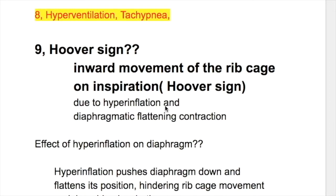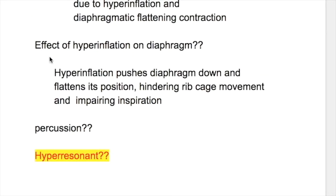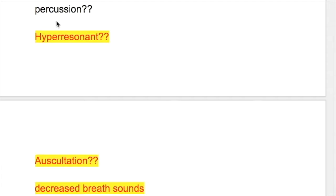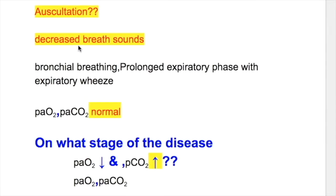Hoover sign occurs due to hyperinflation and diaphragmatic flattening. Hyperinflation pushes the diaphragm down and flattens its position, thus hindering rib cage movements and impairing inspiration. The percussion note is hyper-resonant, and on auscultation breath sounds are decreased, with bronchial breathing, a prolonged expiratory phase, and expiratory wheeze.